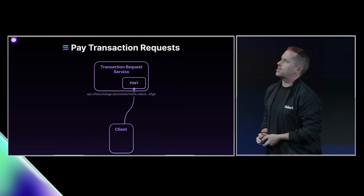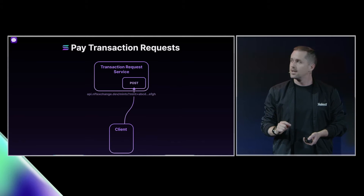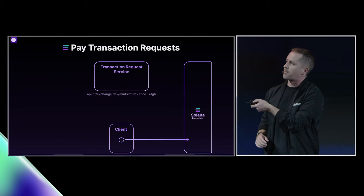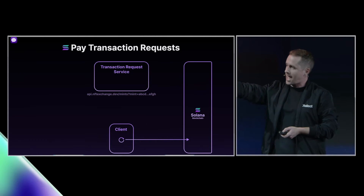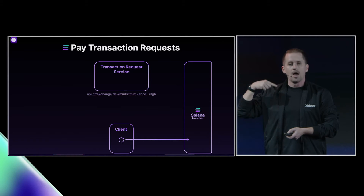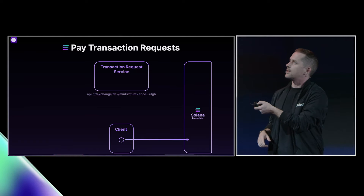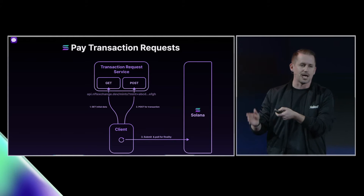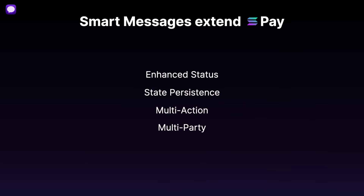After reading that information, the client calls a POST request, and this builds the transaction and returns it in a serialized format. The client then signs the transaction and submits it to the Solana blockchain, and manages the process of checking for the finality and the confirmation of the transaction. Altogether, that's three things: a GET for educational information, a POST request to build the transaction, and a submission from the client side.